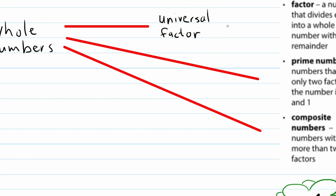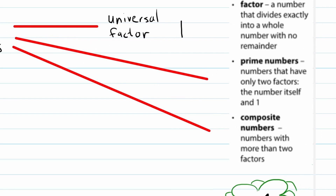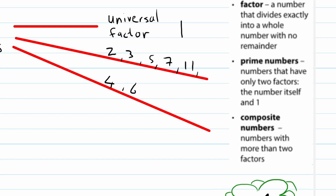The first category is the universal factor, which is just the number one — it only has one factor, which is itself. Second, prime numbers are numbers that have only two factors: one and itself. Examples include two, three, five, seven, eleven, and so on. Thirdly, composite numbers are numbers with more than two factors — examples include four, six, eight, nine, ten, twelve, and so on.